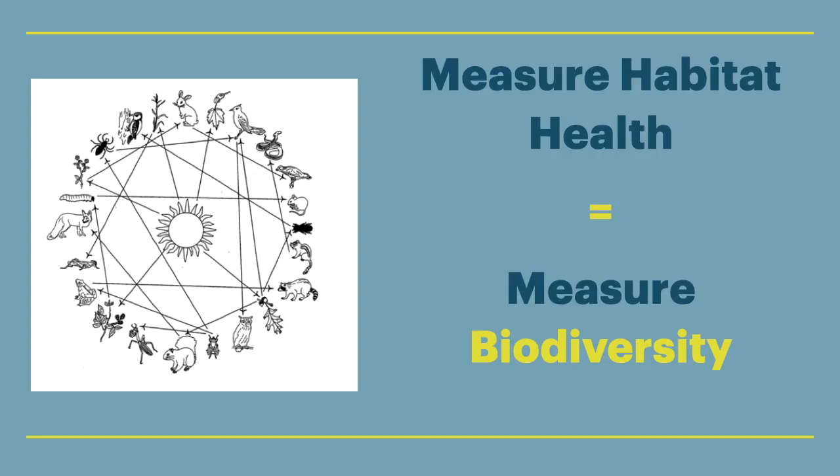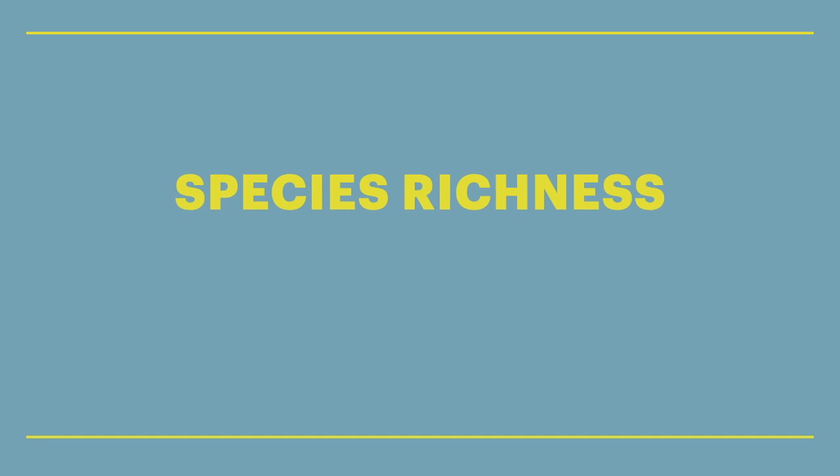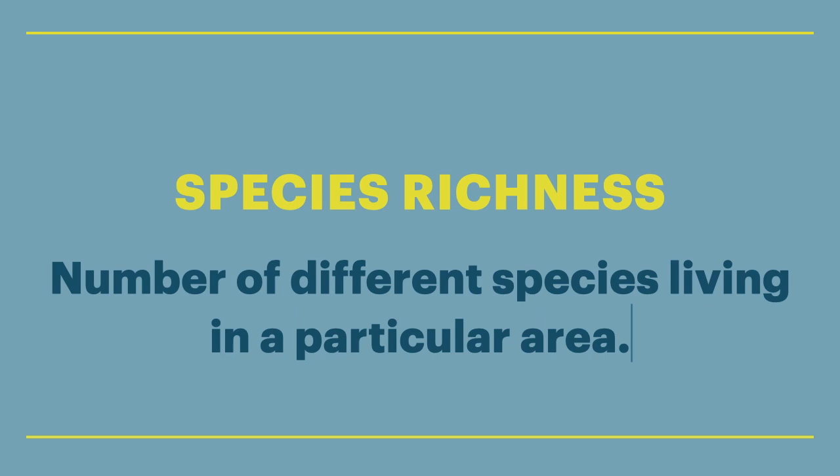To measure the health of habitats, scientists often measure biodiversity. One way to measure diversity is called species richness, which is the number of different species living in a particular area.